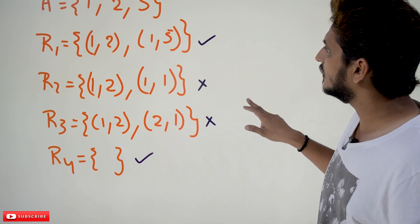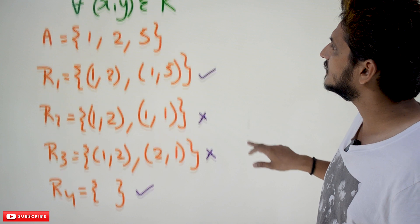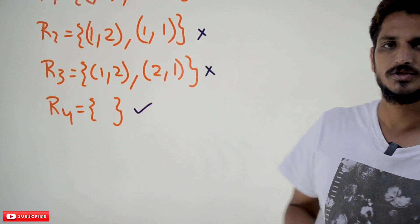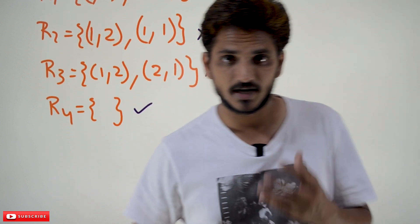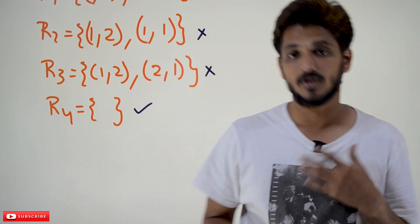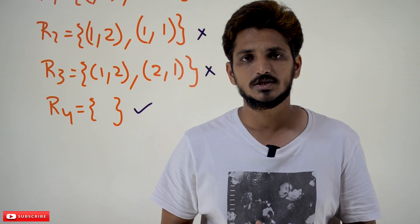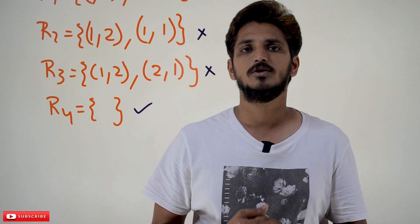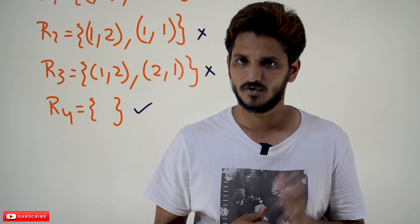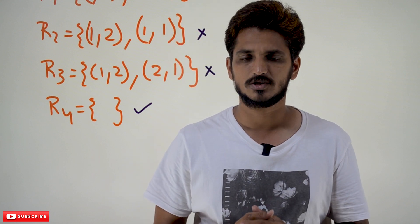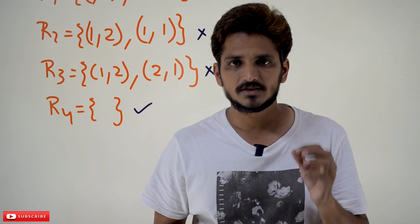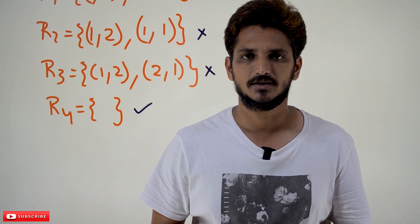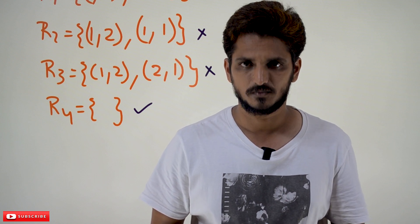So this is about symmetric, anti-symmetric, and asymmetric relations. Hope you understand these examples. If you have any questions regarding the concept, please post your questions in the comment section below. Thanks for watching. If you haven't subscribed to our channel, please subscribe and press the bell icon for the latest updates. Thank you.